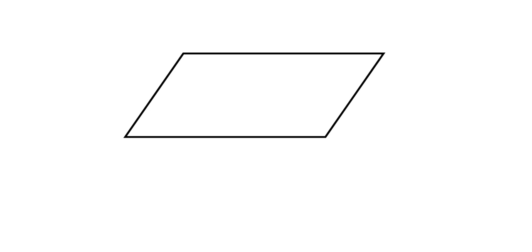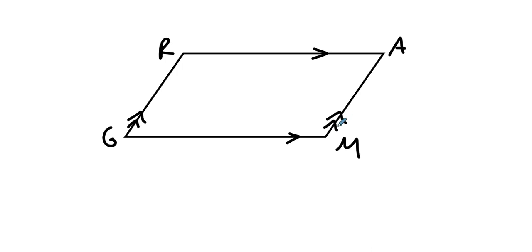So how does that help us? Let's imagine we have some parallelogram — here's a parallelogram GRAM. Because it's a parallelogram, this side is parallel to that one, and this side is parallel to that one. Let's draw in this diagonal right here. We know that when you have two parallel lines cut by a transversal, these angles have to be congruent — they are alternate interior angles.